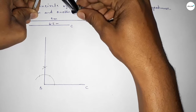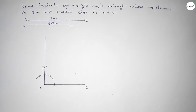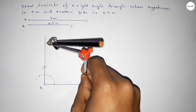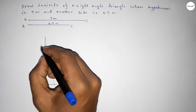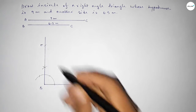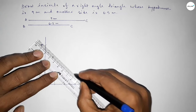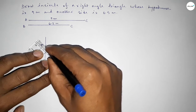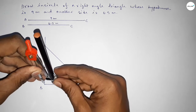Now taking the length of 9 centimeters using the compass and putting the compass on point C, cutting to mark point A, then joining A and C. So we have got our right-angle triangle. Now we have to bisect the angles.